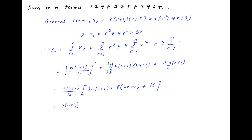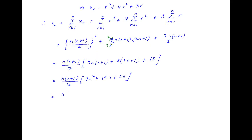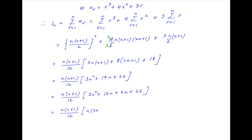This is equal to n(n+1)/12, and the term in the brackets can be rewritten as 3n² + 13n + 6n + 26, which factors as n(3n+13) plus n times ... giving n(3n+13) + (3n+13), i.e., (n+1)(3n+13) — wait — n times (3n+13) plus n times (3n+13)... that is n(3n+13) + (n+2)(3n+13).